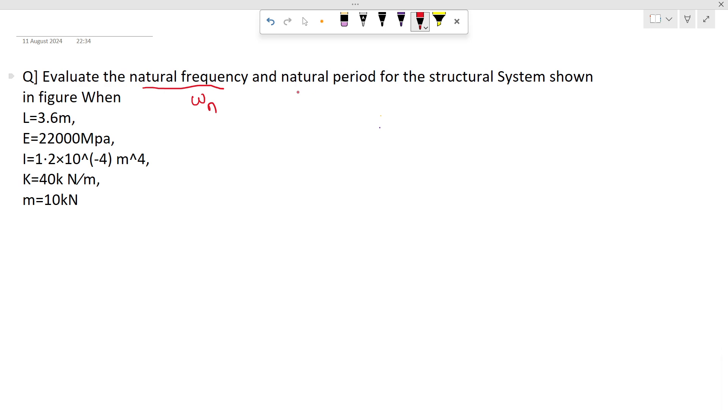and natural period Tn for the structural system. The structural system is something like this: there is one cantilever beam, at the free end a mass is attached, and there are two springs having stiffness K attached at the top and bottom.